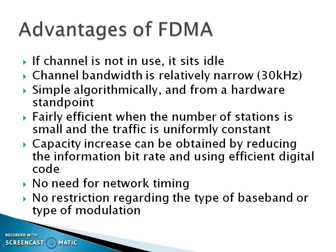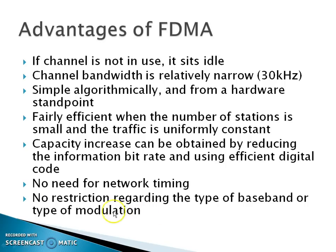Advantages of FDMA: if a channel is not in use, it sits idle — each frequency is assigned to an individual user, so unused frequencies are wasted. Channel bandwidth is relatively narrow at 30 kHz, making it simple algorithmically and from a hardware standpoint. It is fairly efficient when the number of stations is small and traffic is uniformly constant. Capacity increases can be obtained by reducing the information bitrate and using efficient digital codes. No network timing is needed, as frequency is divided. No restrictions on the type of baseband or modulation.